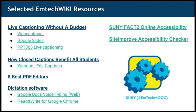Read and Write for Google Chrome has similar functionalities. There are also resources that are simply websites about accessibility — the SUNY FACT2 task group has created a great website that is one of the resources on EmTech. Another resource is Siteimprove, an accessibility checker that the University of Buffalo has licensed for the enterprise, though many people can use the free version to a certain extent.